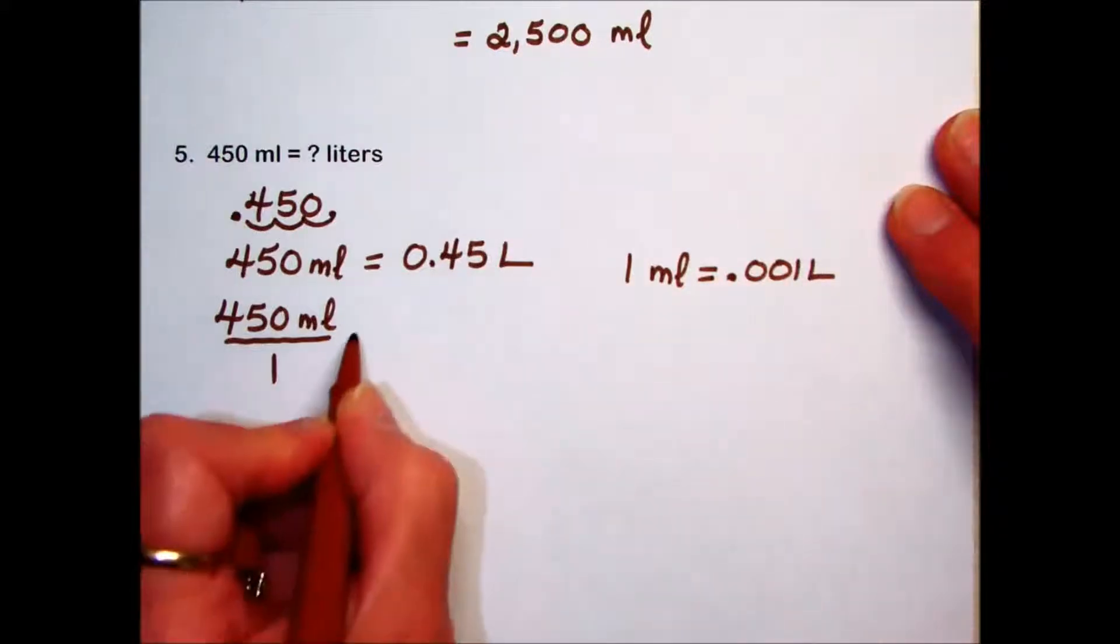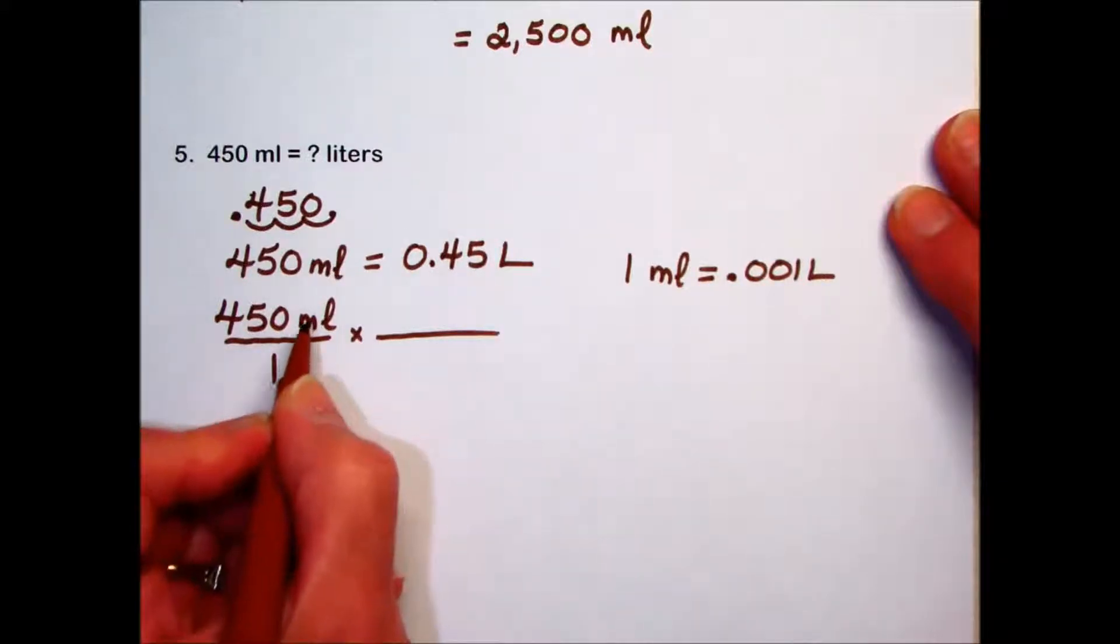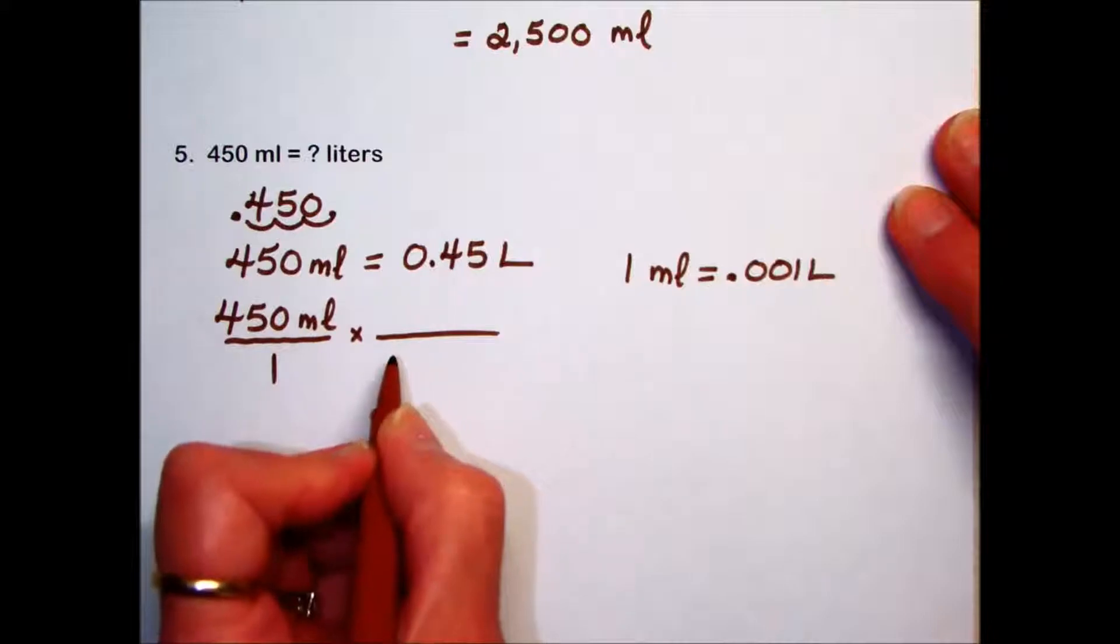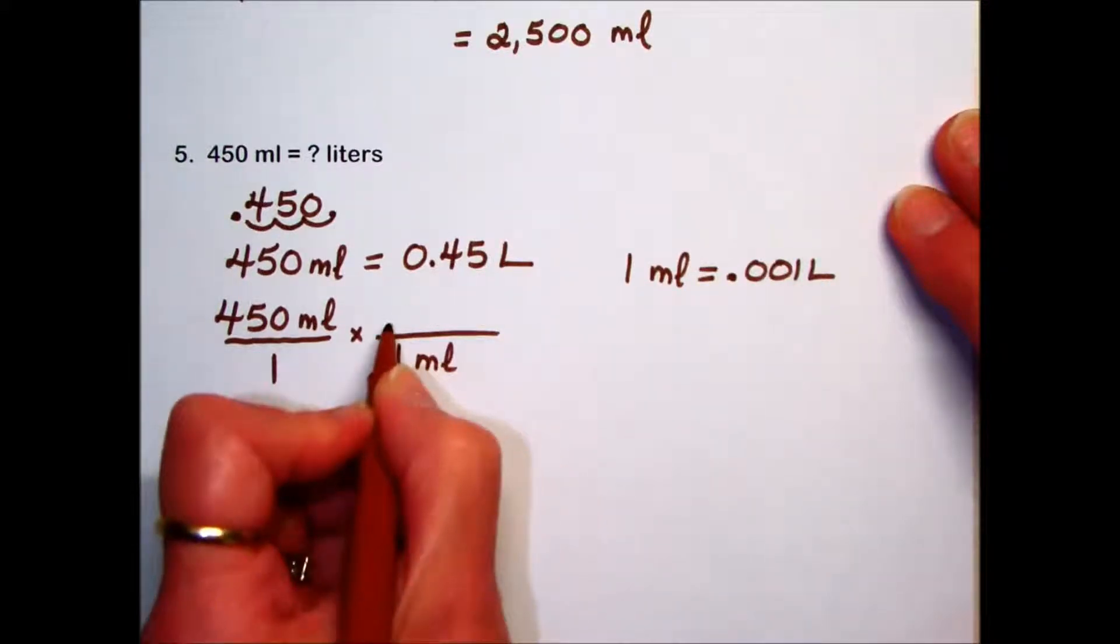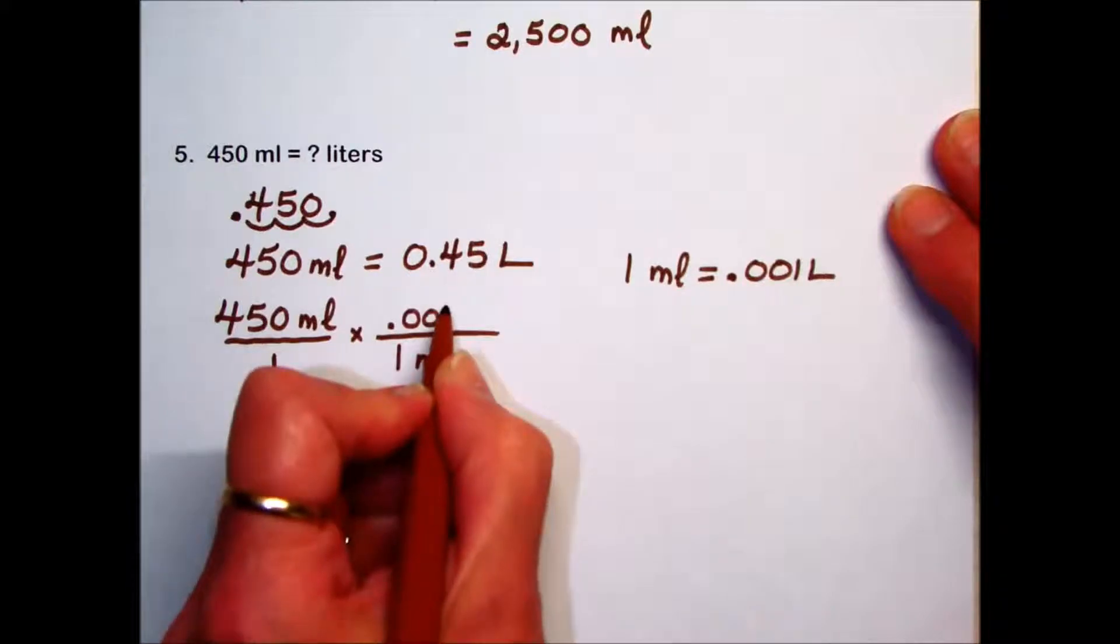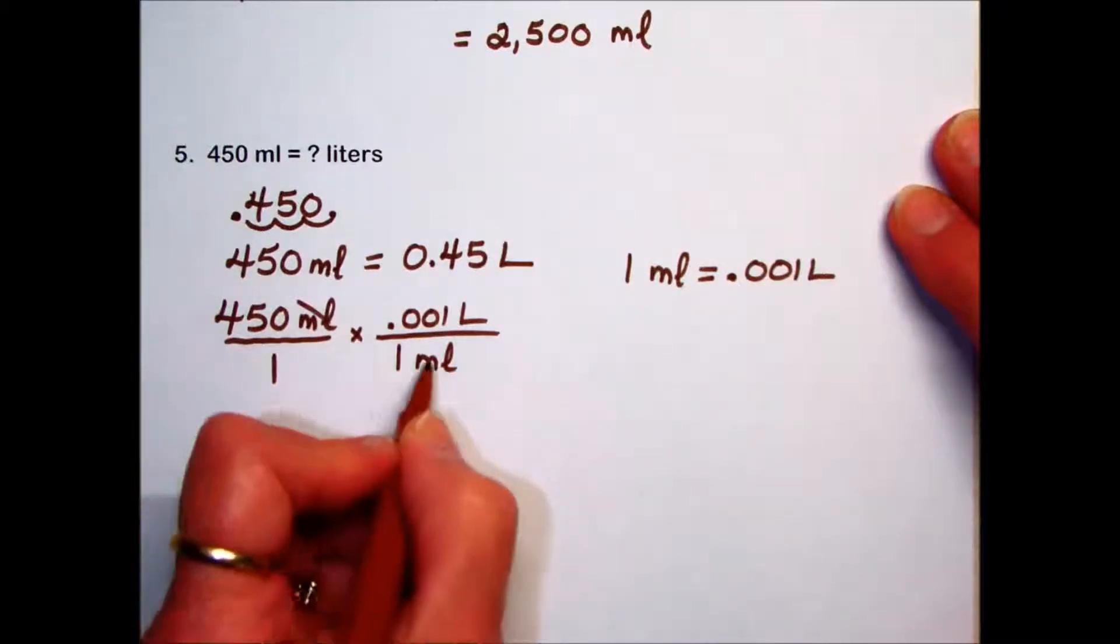We'll express that as a conversion factor fraction that will eliminate our milliliters, our given unit. To do that, this time our arrangement will have the 1 milliliter in the denominator with the equivalent 1,000th of a liter in the numerator. Milliliters cancel out.